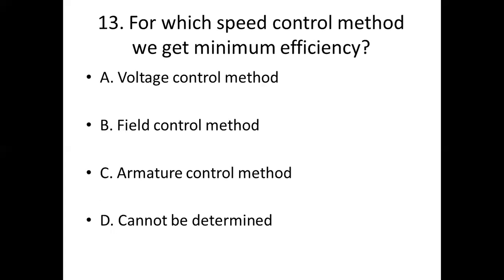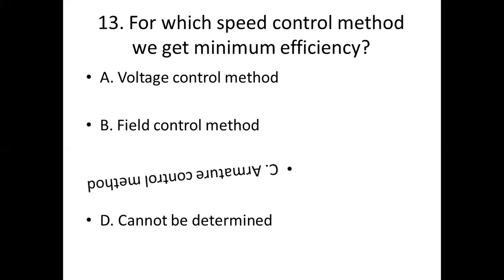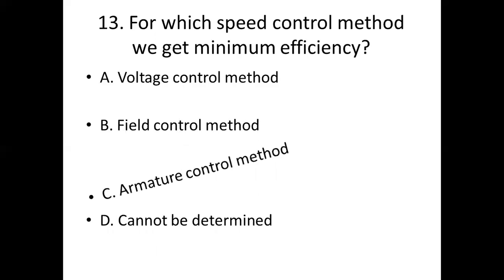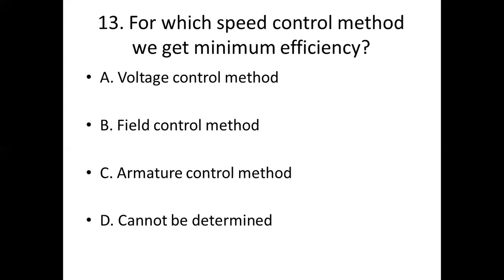Thirteenth one. For which speed control method do we get minimum efficiency? Option A: voltage control method. Option B: field control method. Option C: armature control method. Option D: cannot be determined. Answer: Option C, armature control method.